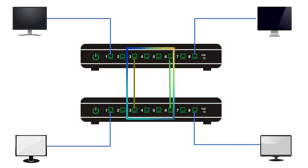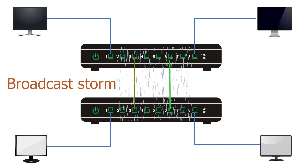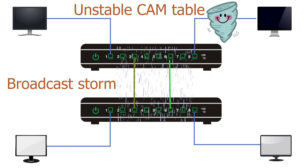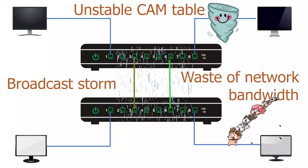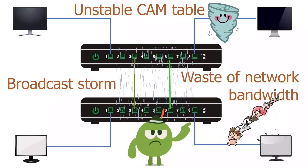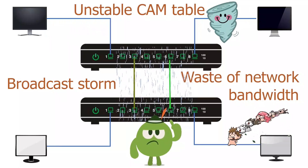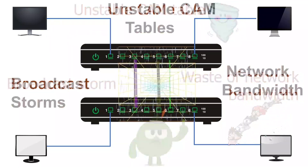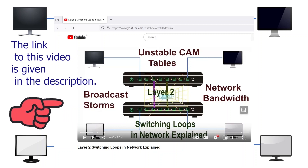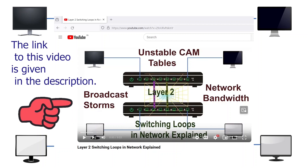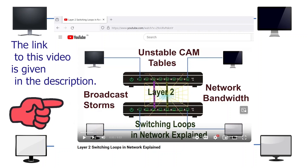A switching loop causes three main problems: broadcast storm, unstable CAM table, and waste of network bandwidth. A network never works with a switching loop. If you want to learn more about switching loops, you can check this video. It explains how switching loops occur and how they affect the network.